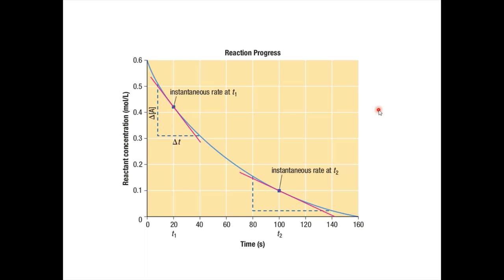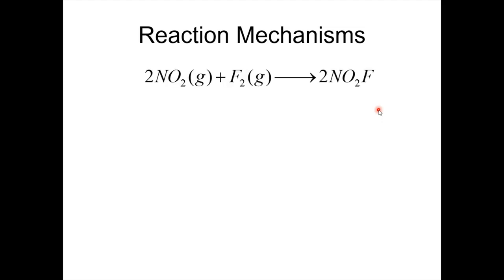Reaction mechanisms are a set of steps that show how a chemical reaction takes place. For example, this chemical equation shows NO2 reacting with fluorine to form NO2F. The question is: how does this reaction take place? You probably know that reactions occur because molecules crash into each other, and more molecules around means a faster rate — that's why increasing concentration speeds up the reaction rate.